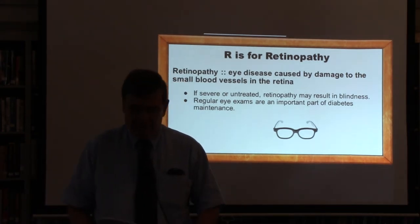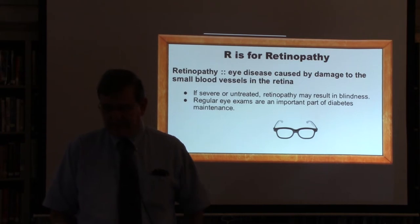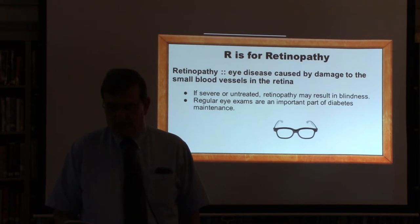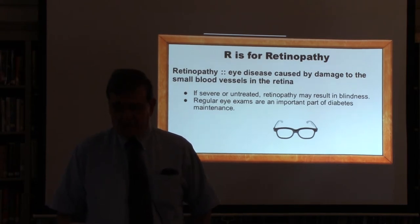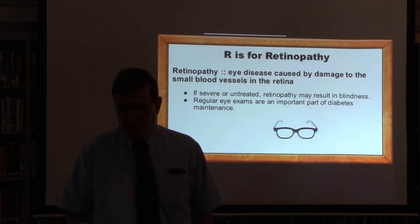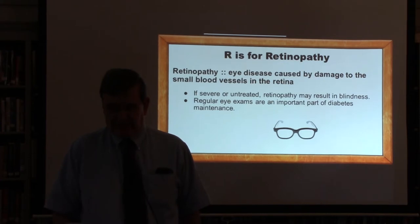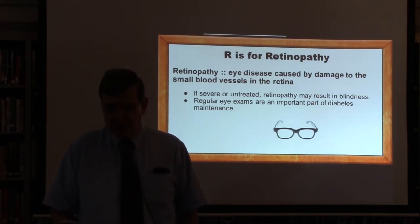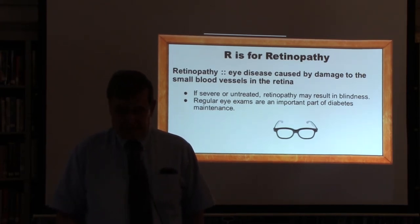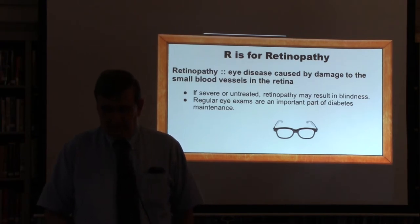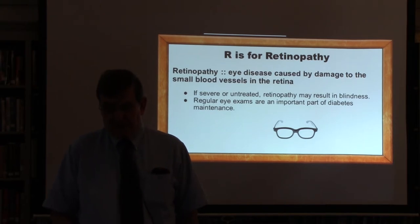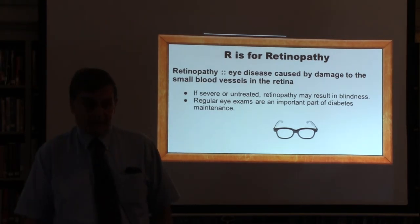R is for retinopathy. Another complication of diabetes, retinopathy is an eye disease caused by damage to the small blood vessels in the retina — the light-sensitive layer of tissue that lines the back of the eye. When severe or left untreated, retinopathy may result in blindness. This is why your doctor recommends routine eye exams with a specialist, and it's another reason that blood glucose control is so very important.